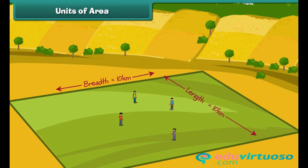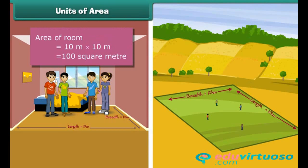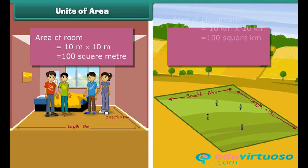It is clear that more number of children can be adjusted comfortably in the playground. The area of the room is equal to 100 square meters, while the area of the playground is equal to 100 square kilometers. Thus, square kilometer is a bigger unit for measuring area than square meter.